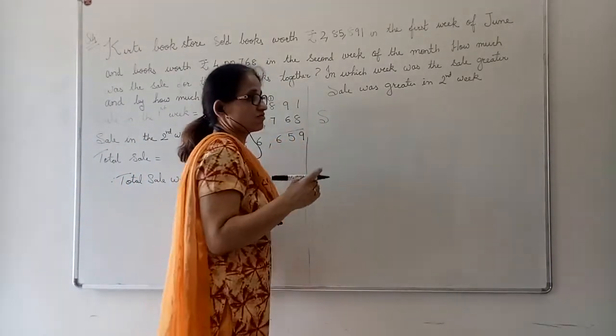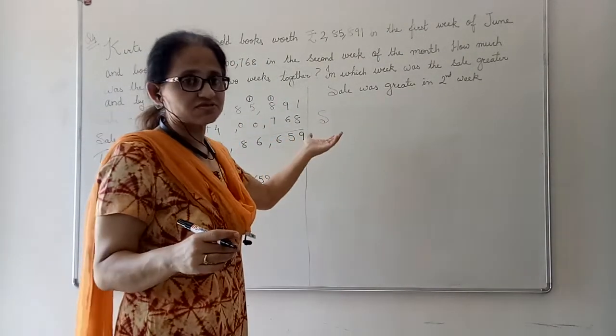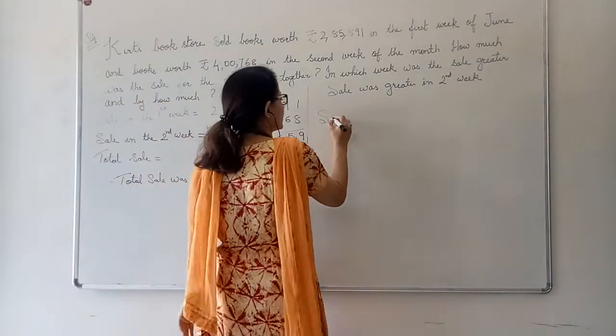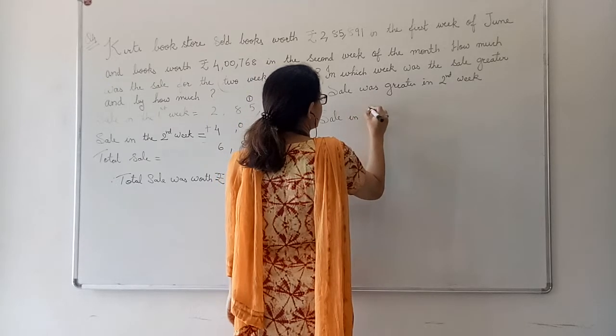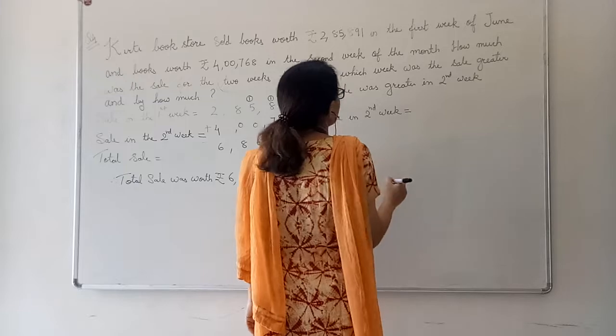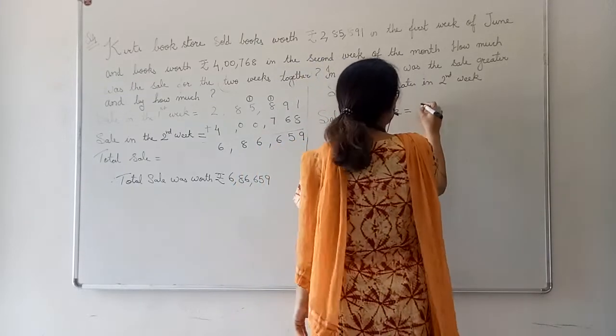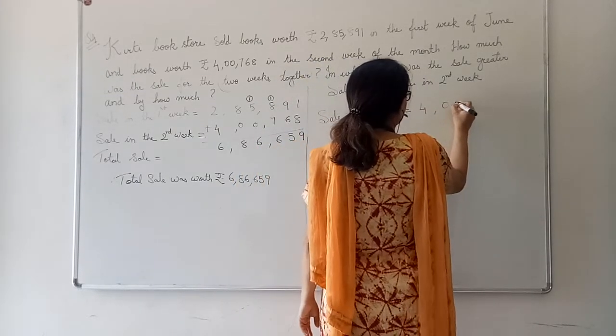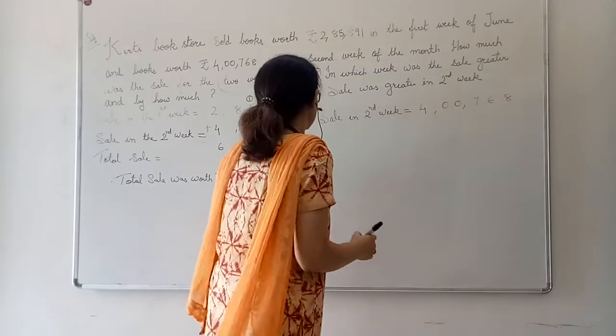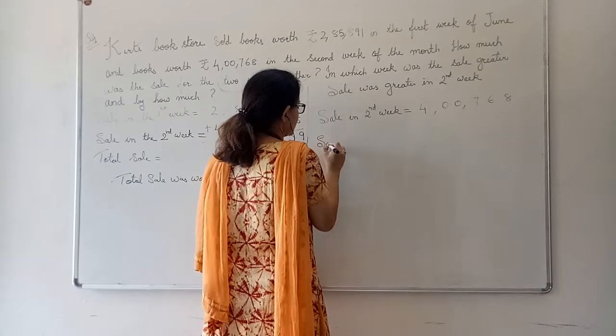Here, in subtraction, the bigger number comes first and the smaller number comes later. So first we will write, sale in second week. Keeping some gap between the digits. 4,76,768.